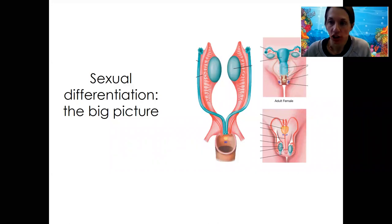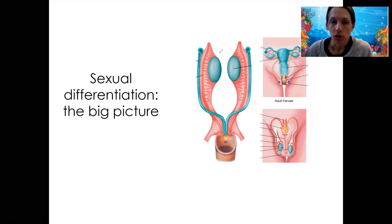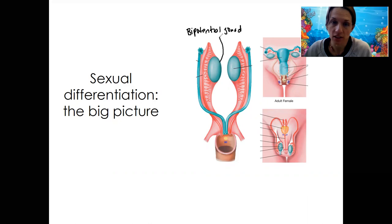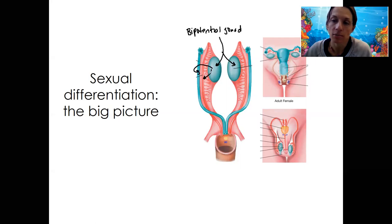This will be an overview of sexual differentiation, the process of becoming male or female. Starting with the bipotential gonads — they have the ability to become either testes or ovaries. Depending on whether these become testes or ovaries, that's going to determine the rest of these internal genitalia systems, as well as external genitalia and ultimately the brain and the rest of the body.